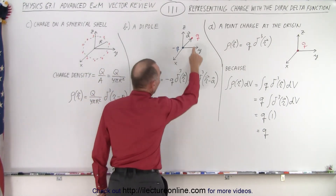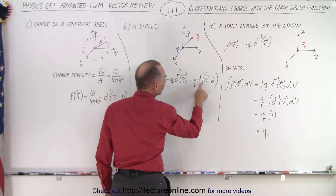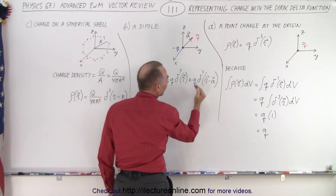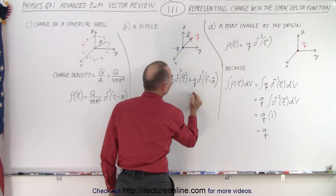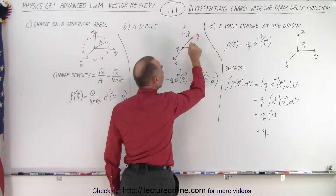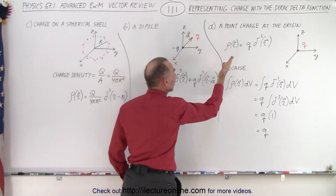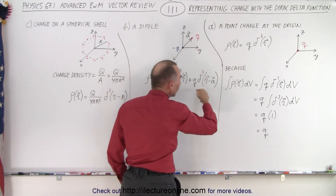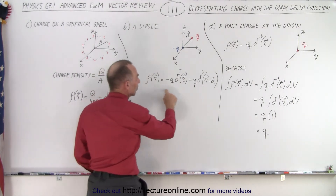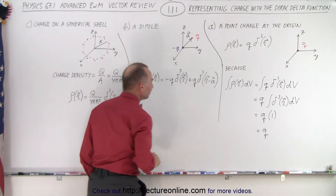Now we have to represent the other charge away from the origin. We use a positive charge Q with the delta function of R minus A. This places the position of the Dirac delta function at the location of the other charge — it's infinite at that location and zero everywhere else — making it a good representation of the second charge. Adding them together gives the representation of the two charges of the dipole.